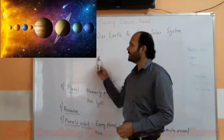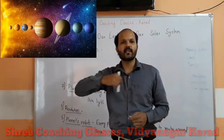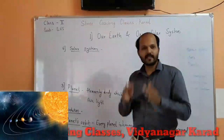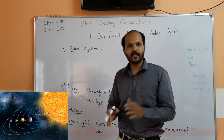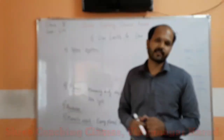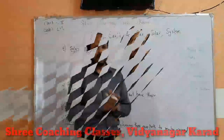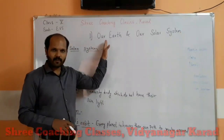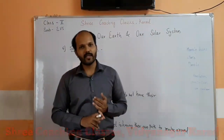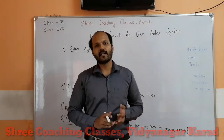Our next point is the solar system. The sun, which is a star, and the planets which revolve around the sun — these together are known as the solar system. It means the solar system contains a star and planets. Except the sun and these eight planets, there are other heavenly bodies present in the solar system, which we will see in today's lecture. So in today's topic — our Earth and our solar system — we saw: heavenly body, planet, star, revolution, rotation, and the solar system.